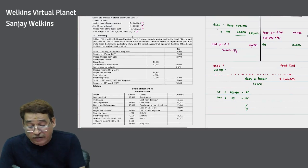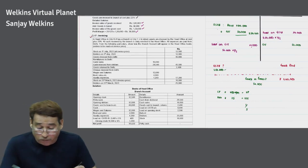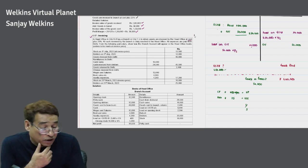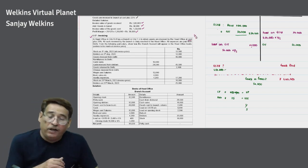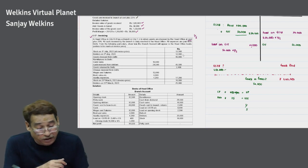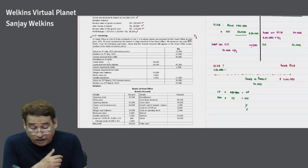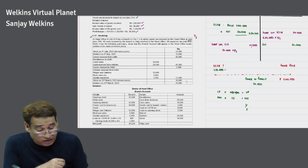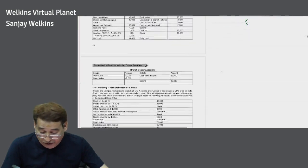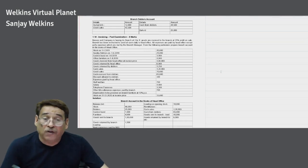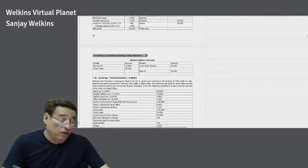Besides that, we have question 1.17, which you should be able to manage on your own. Rate is cost plus 25%, so loading rate = 1/5. Opening stock 12,500 — you know the treatment. Debtors, goods received from Delhi, remittances to Delhi, cash sales, cash from debtors, goods return with loading, expenses, closing stock — everything is given and straightforward. 1.17 can be very easily managed. In this session I think this is more than enough, and we will continue in the upcoming session. Goodbye.